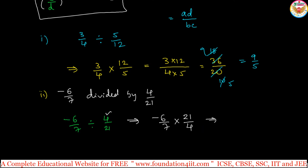Now you can directly normal multiplication process, you can apply. Minus 6 into 21 by 7 into 4. This you can simplify. If you, instead of multiplication, you can simplify like this also.